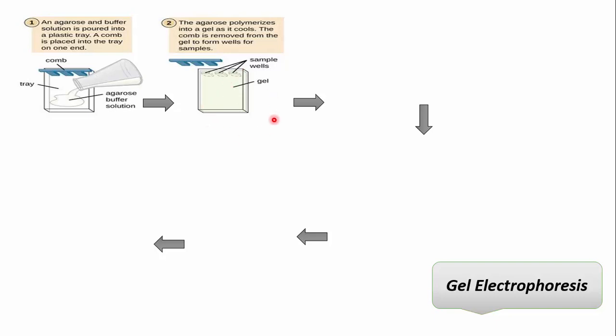Then we place the gel into an electrophoresis tank and pour electrophoresis buffer into the tank until the surface of the gel is covered. The buffer conducts the electric current, and the buffer type always depends on the approximate size of the DNA in the sample.